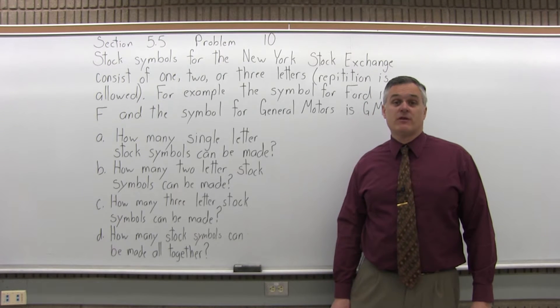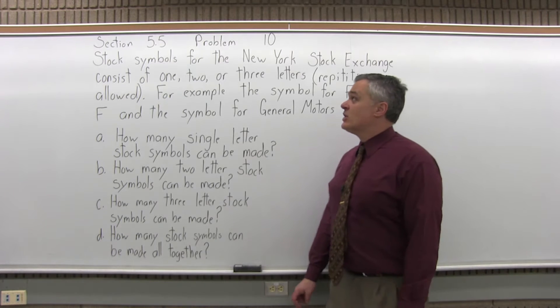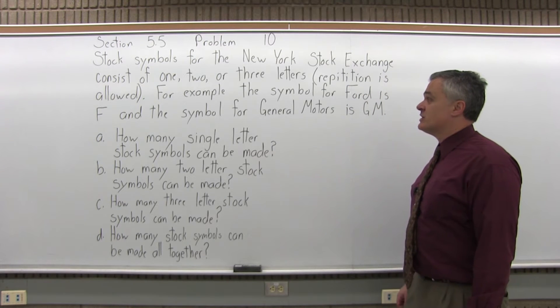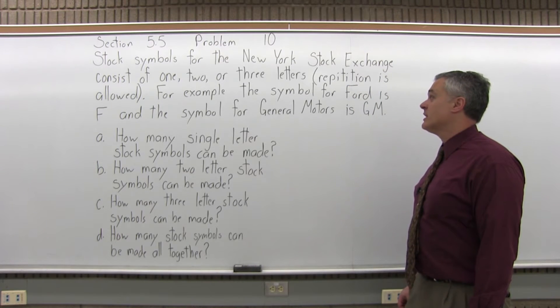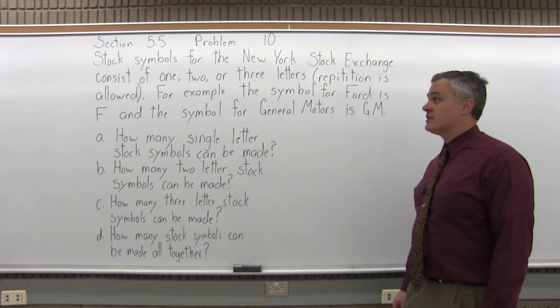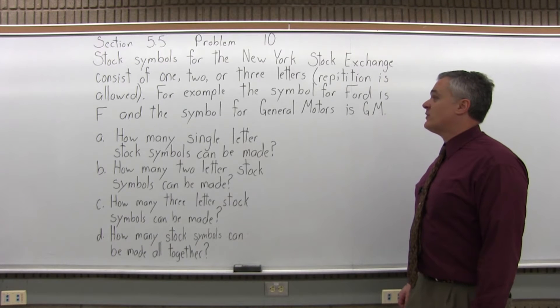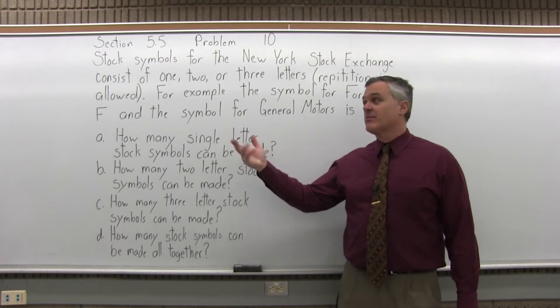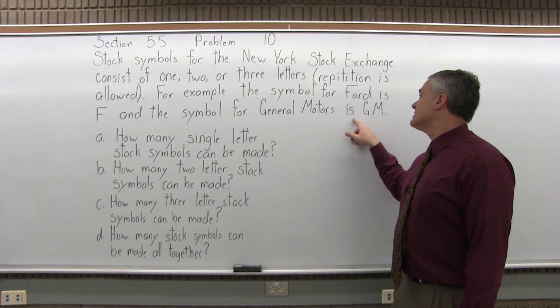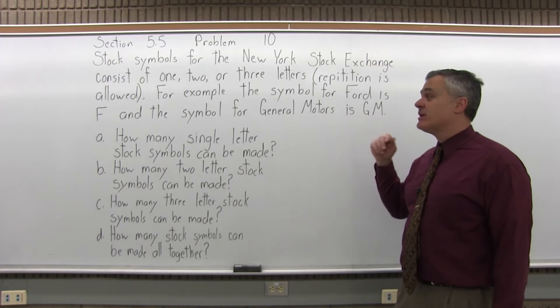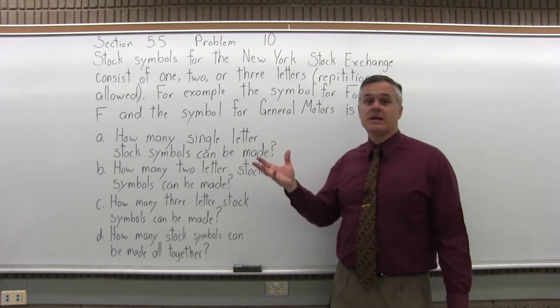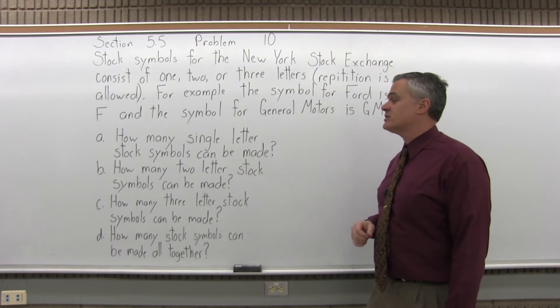This is Section 5.5, Problem 10. It says stock symbols for the New York Stock Exchange consist of 1, 2, or 3 letters, and repetition is allowed. So you could have BB, for example. It says, for example, the symbol for Ford is F, capital F, and the symbol for General Motors is GM, both in capital. That makes sense, and every big company has a symbol if it's traded on the stock exchange.